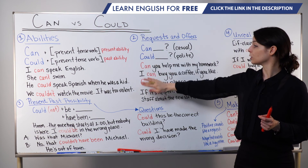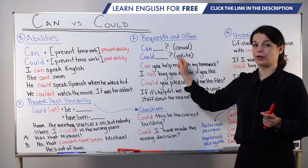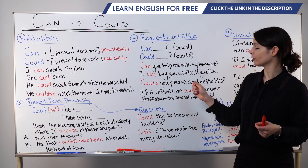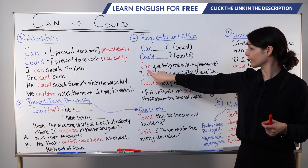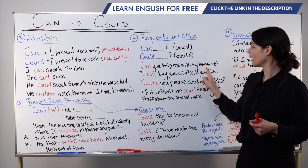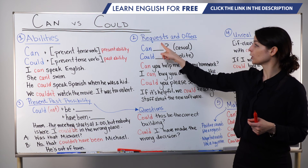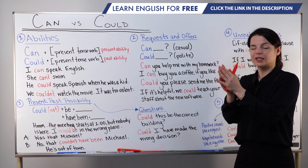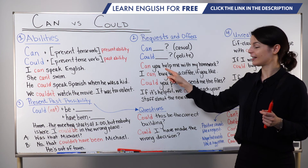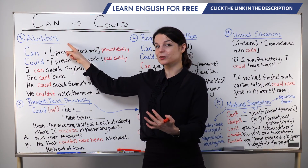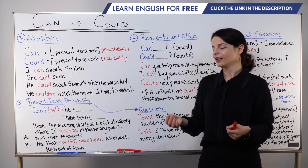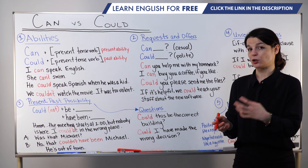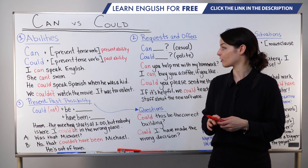We begin our request or offer usually with can and make a question. Let's look at using can first: Can you help me with my homework? This is a request. Instead of saying please help me, using can you is like asking, do you have the ability to help me? Would it be okay? It's a bit softer — can you help me with my homework sounds a little nicer and more friendly.